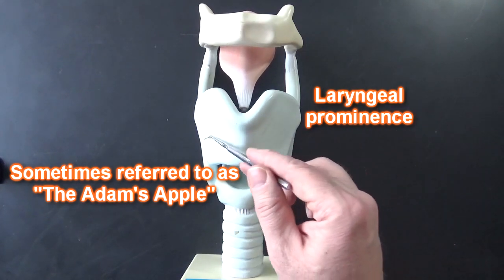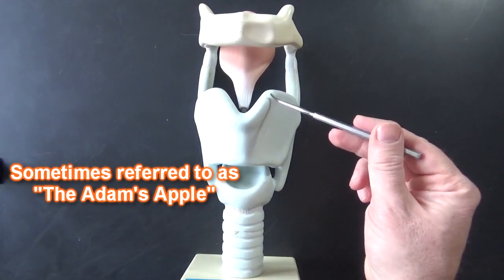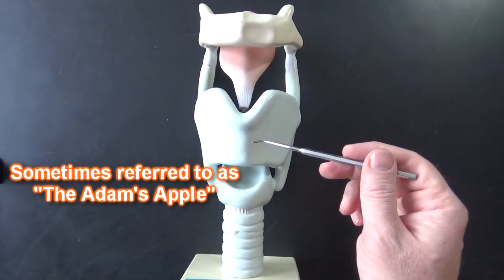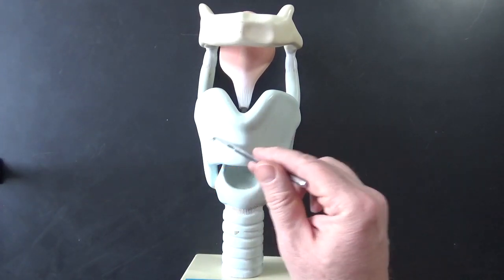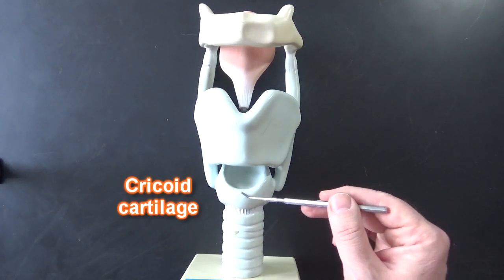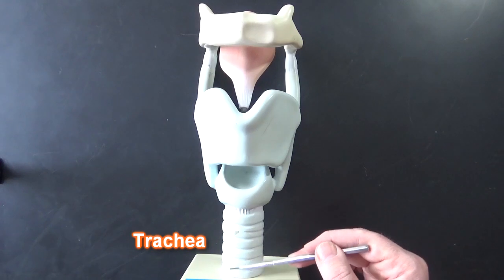Males have more testosterone so the cartilage grows bigger making this protrude more in the neck, the anterior neck. But this is thyroid cartilage right here. This is the cricoid cartilage down here and then the trachea is going to be down here.